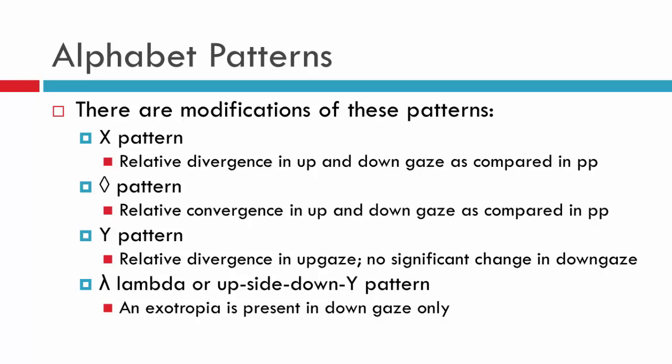There are modifications to the AV patterns. AV patterns are the most common, but there are other patterns you may see in clinic: the X, the diamond, the Y, and the lambda pattern. For the X pattern, given the shape of the letter, we expect an increase in divergence of the eyes in both up gaze and down gaze. In the diamond pattern, we expect relative convergence up and down. For the Y pattern, we expect little or no change between primary and down gaze, but some relative divergence in up gaze. With the lambda, we expect the opposite: relative divergence from primary to down gaze, but little change from primary to up gaze.